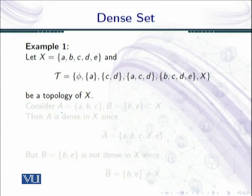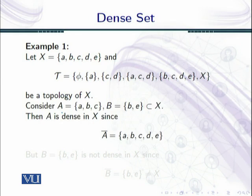Our first example: let A be a five-point set {a, b, c, d, e} with a given topology. Consider two sets: A = {a, b, c} and B = {b, e}. Compute the closure of A. The closure of A is {a, b, c, d}, which is exactly the set X. So according to the definition of the dense set, A is dense in X.